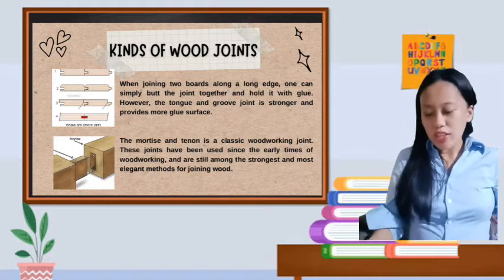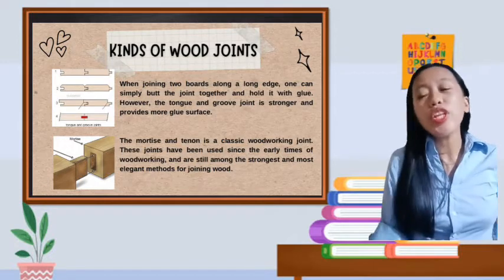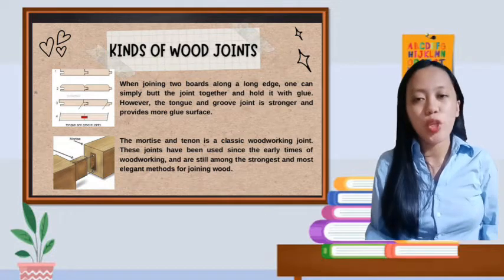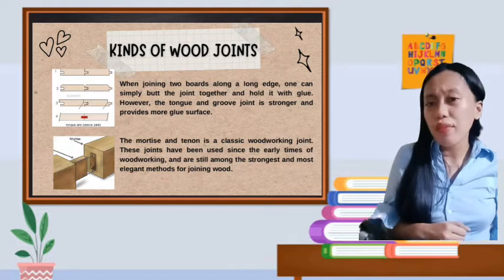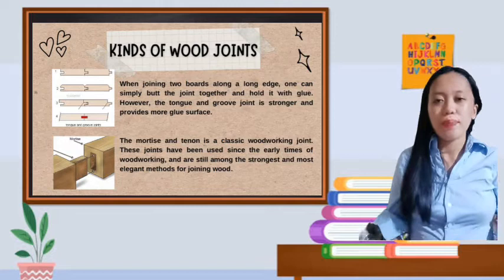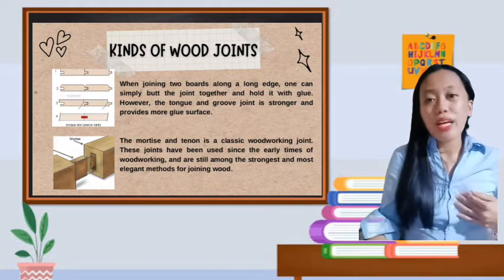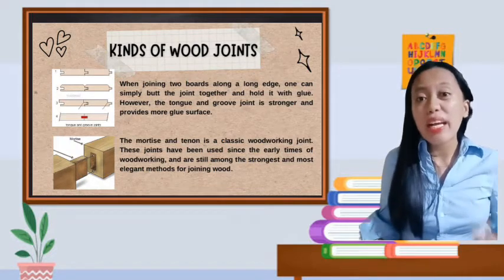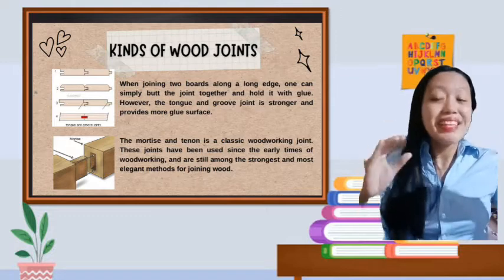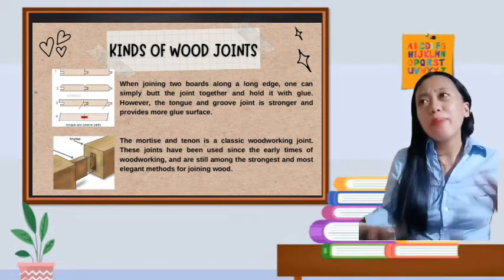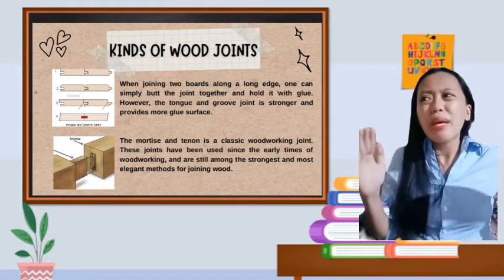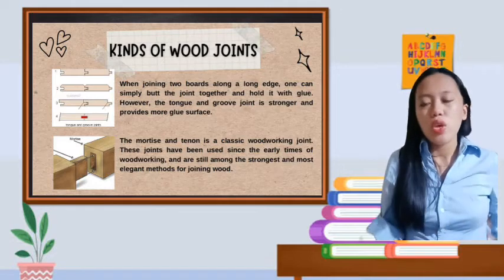Let's proceed to the tongue and groove joints. When joining two boards along an edge, one can simply butt the joint together and hold it with the glue. However, the tongue and groove joint is stronger and provides more glue surface. If you notice, it uses less glue. Less glue because there's only one tongue and groove to stick them together. Not like dovetail or box, which have many tails and pins where you can put a lot of glue. So it uses less glue.